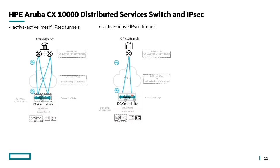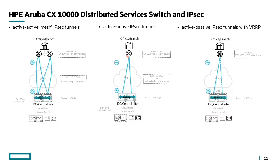If active-active is not supported at the remote site or the vendor device is not a CX 10,000, an active-passive arrangement can be used — one tunnel active, the other down — with VRRP for failover. This is typically suited for legacy devices that don't support active-active.